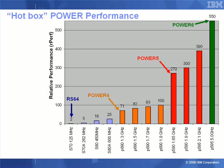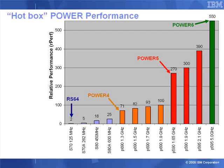In 2005, Power 5 was introduced, and this added two more technologies: shared processor partitions, where we could allocate a logical partition less than a whole CPU, and we had the virtual I/O server. Now these four technologies we're going to look at in a little bit more detail in this movie, and in a lot more detail in other movies.